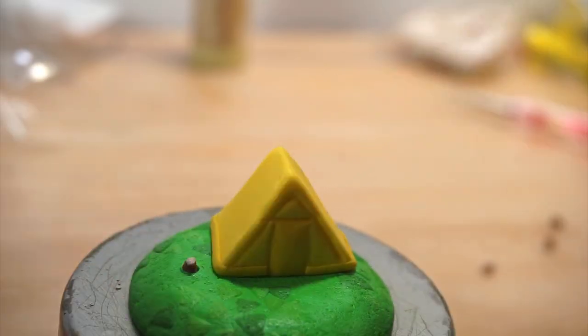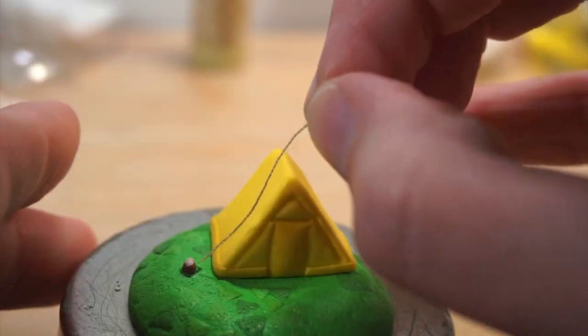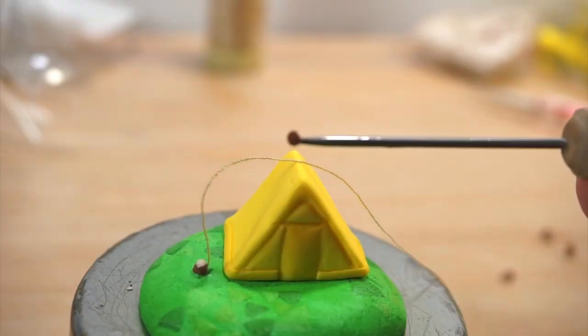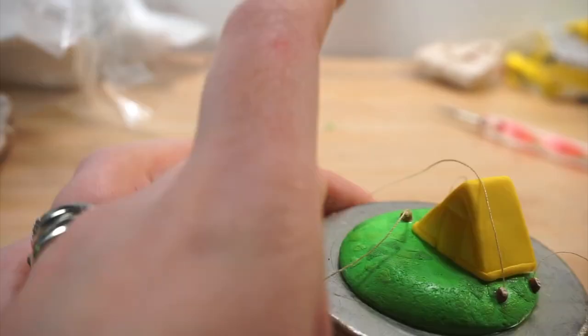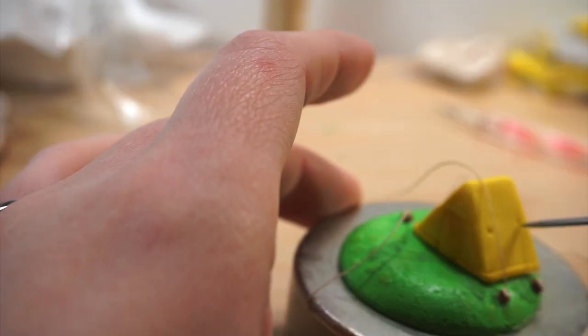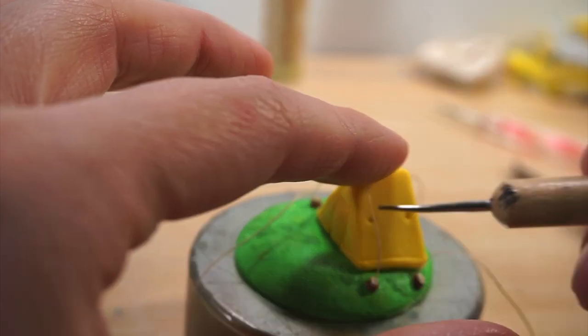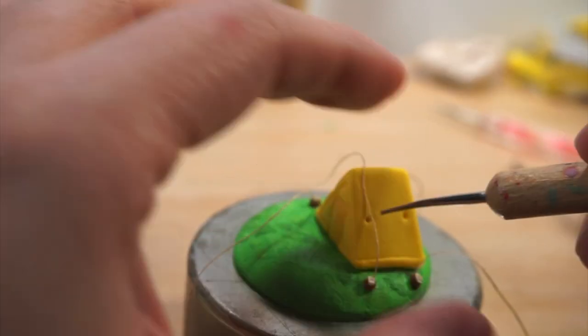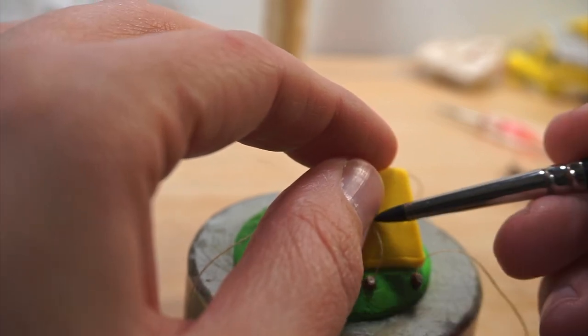Instead I just decided to add an indention into the grass, place the log post in, poke a hole, then stick the thread in with a little bit of bake and bond for security. Then I take an extra piece of brown clay and press it in so that thread is going nowhere. I've done all four posts and now I'm putting some holes in the tent itself and pressing the thread into the holes on the tent.